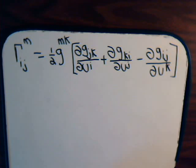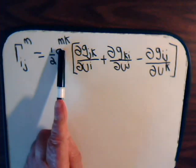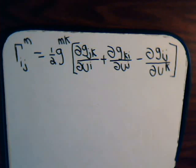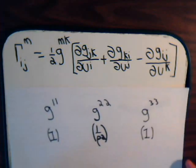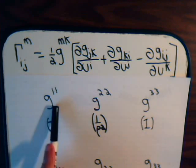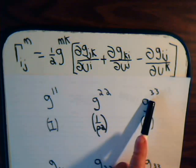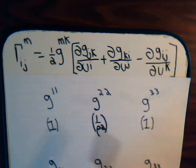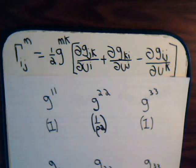Also, with the relationships that we have amongst the different components of the metric tensors, it makes it even more simple, because if these numbers don't match, then it's automatically zero. Remember, we had non-zeros for g11, g22, and g33, which is 1, 1 over rho squared, and 1. So, if these don't match, it's automatically zero.